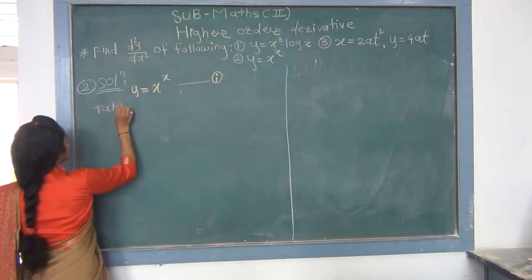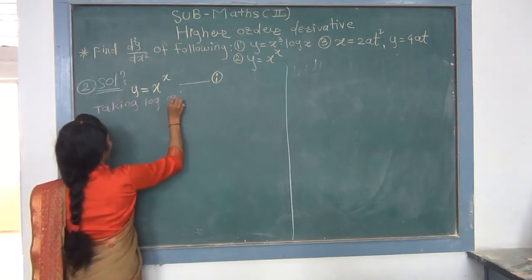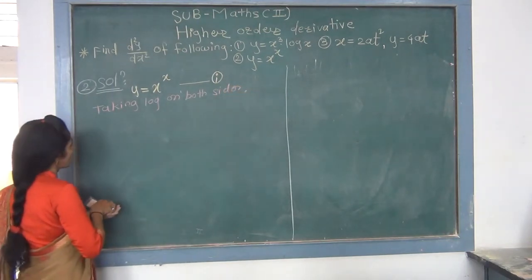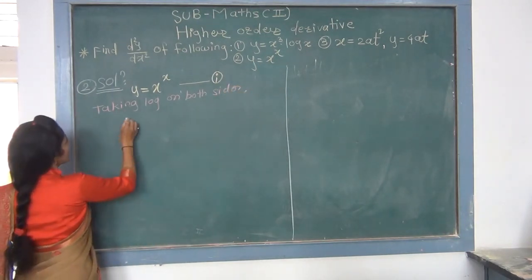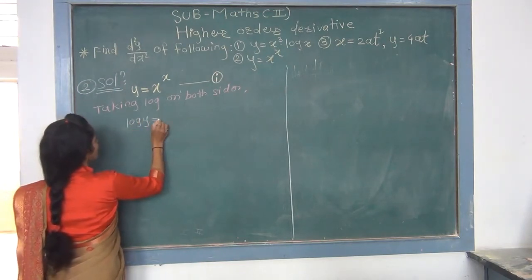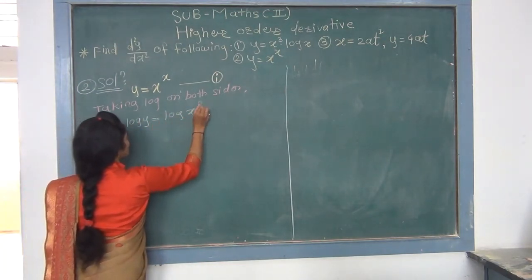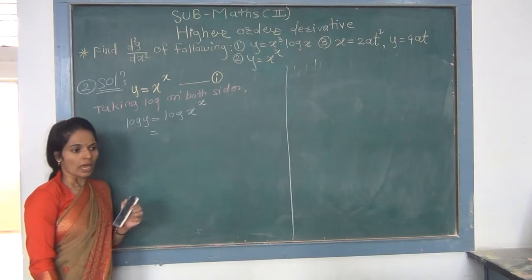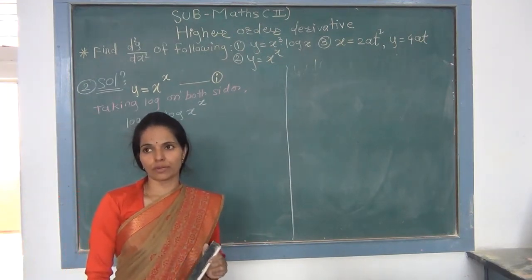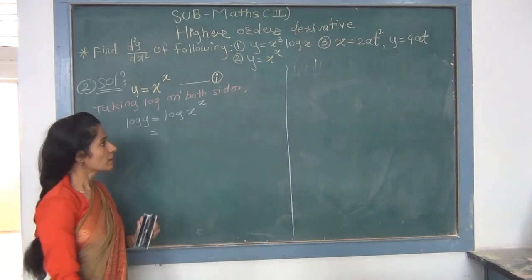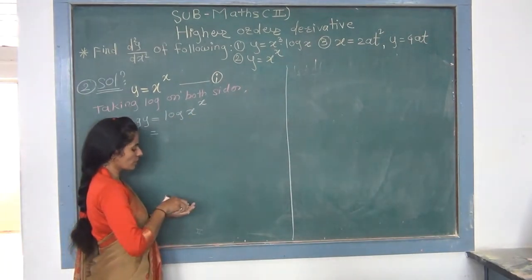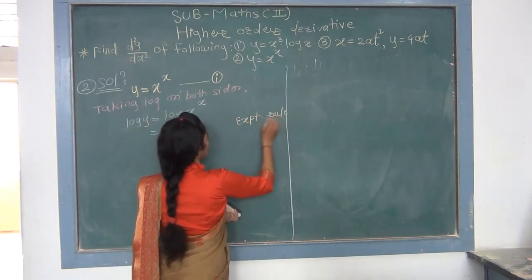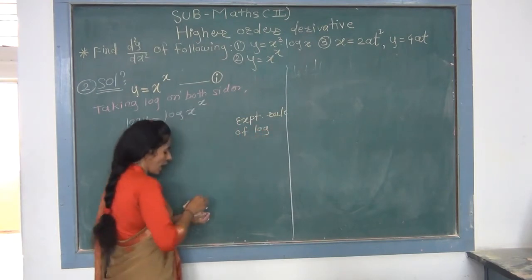We know dy/dx = (dy/dt)/(dx/dt) — this is equation 1. Consider y = 4at: differentiating with respect to t gives dy/dt = 4a (since 4a is constant and derivative of t is 1). Consider x = 2at²: differentiating with respect to t gives dx/dt = 2a·2t = 4at.